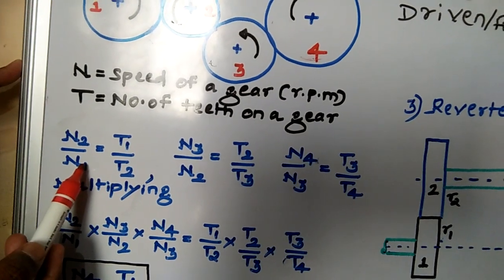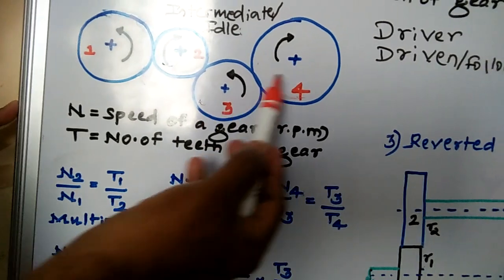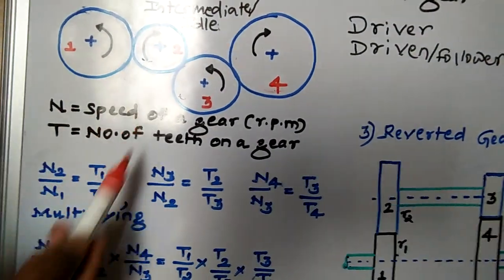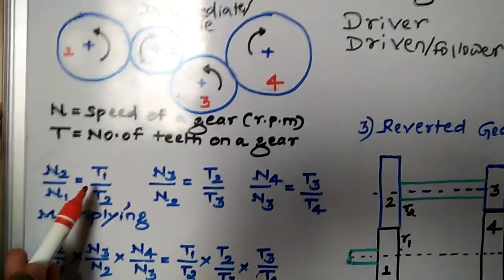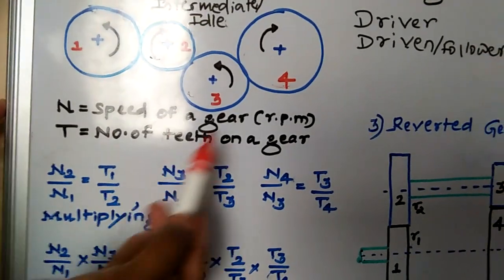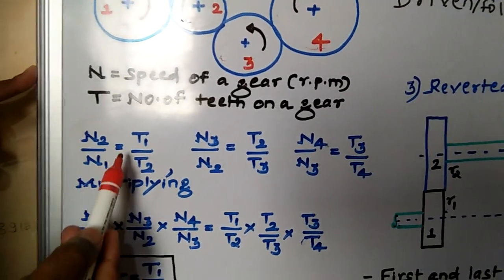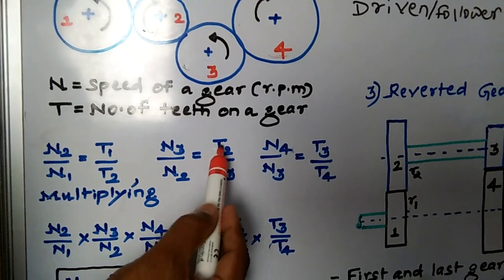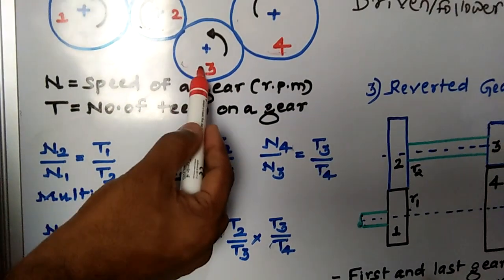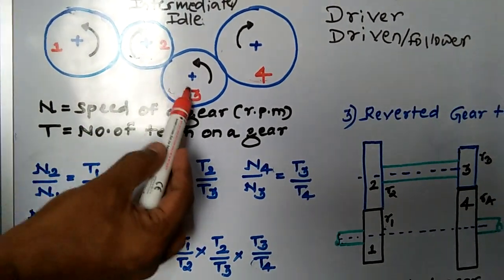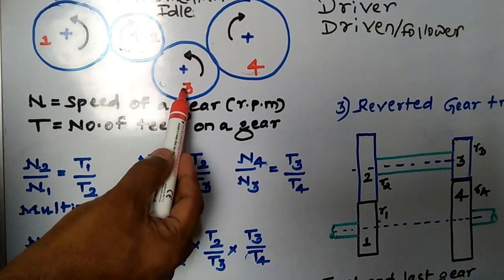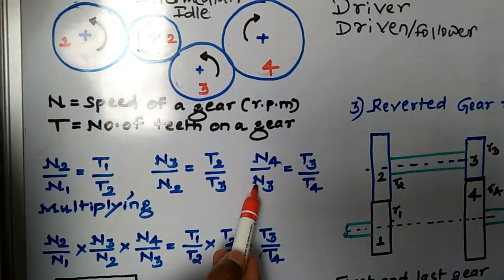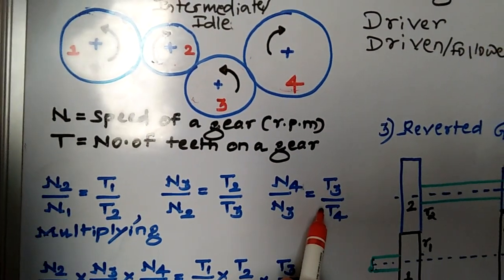Here, N1 is the speed of gear 1, N2 is the speed of gear 2, T1 is the number of teeth on gear 1, and T2 is the number of teeth on gear 2. Similarly, the velocity ratio for gears 2 and 3 is N3 by N2 equal to T2 by T3, where gear 2 becomes the driver. For gears 3 and 4, gear 3 becomes the driver and gear 4 becomes the follower, giving N4 by N3 equal to T3 by T4.